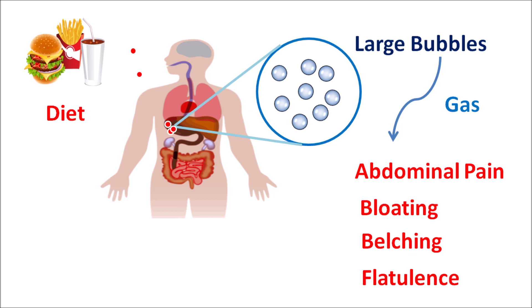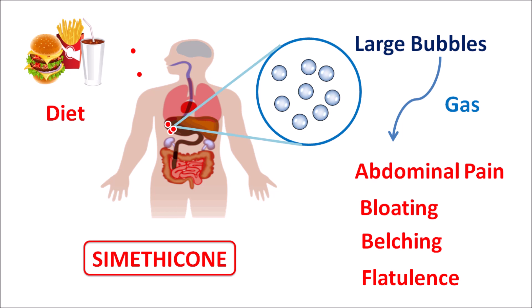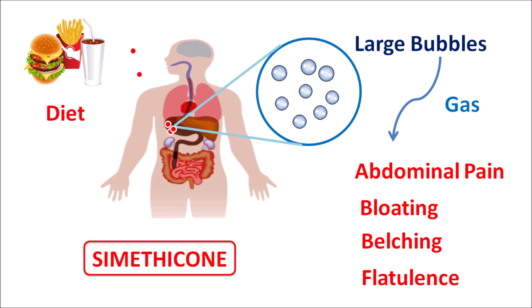Simethicone acts as a surfactant — simethicone molecules coat on these gas bubbles to reduce the surface tension, thereby reducing the size of the bubbles. It also acts as an anti-foaming agent to dissolve these gas bubbles and release the gas. In this way, simethicone reduces gas entrapment within the stomach and colon.